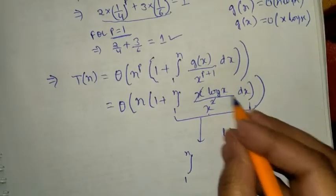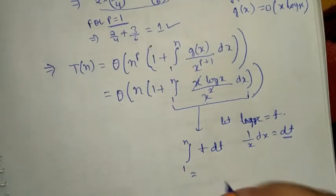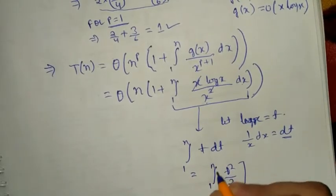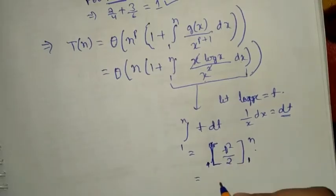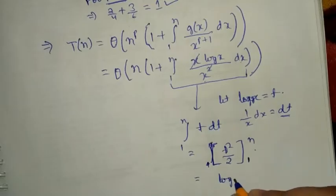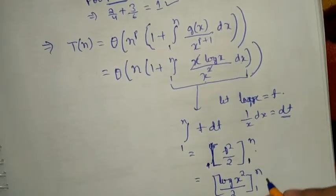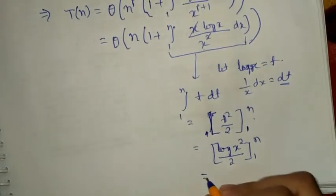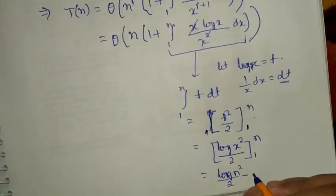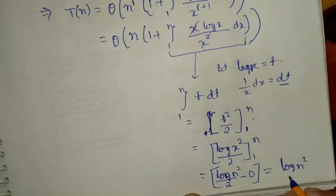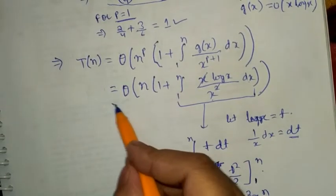With log x equals t and 1/x dx equals dt, after integration we get t squared over 2, and substituting back gives log x squared over 2, evaluated from 1 to n. Putting in the limits: log n squared over 2 minus log 1 squared over 2. Since log 1 is 0, the result is log n squared over 2.